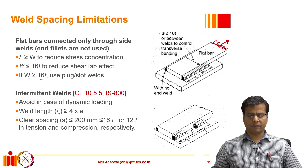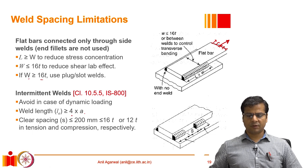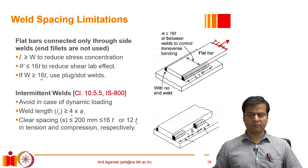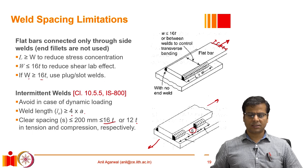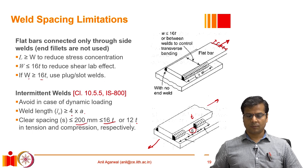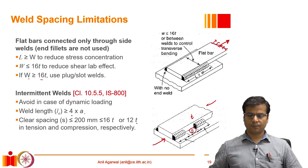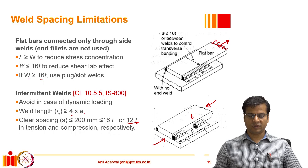Individual weld segments should be at least 4 times the weld size in length, as discussed for regular welds. In addition, the clear spacing between two welds should not exceed 200 mm, or 16 times the plate thickness for members in tension, or 12 times the plate thickness for members in compression — both conditions must be satisfied. So for tension: spacing ≤ 16t and ≤ 200 mm; for compression: spacing ≤ 12t or 200 mm, whichever is less.